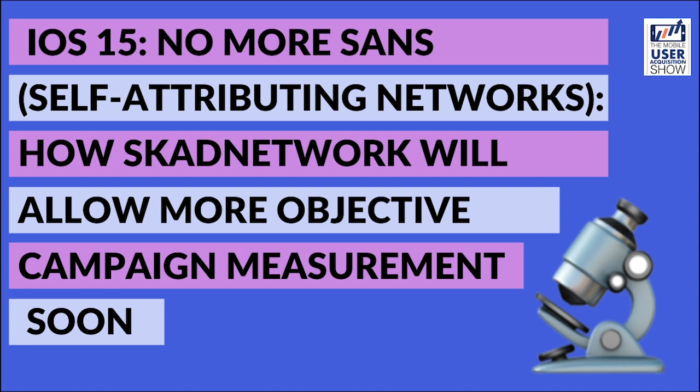One of the bigger changes that's coming with iOS 15 is happening mainly under the hood. This is very significant because this could very well mean there will be no self-attributing networks, or SANs, starting with iOS 15. To be clear, there will be no SANs except one, and I will explain that caveat in a bit. And this obviously has far-reaching implications for advertisers.